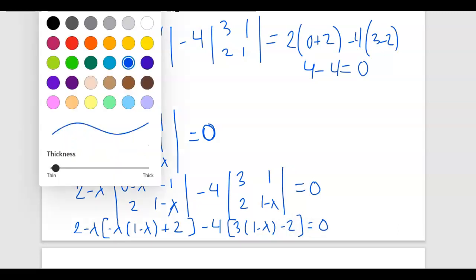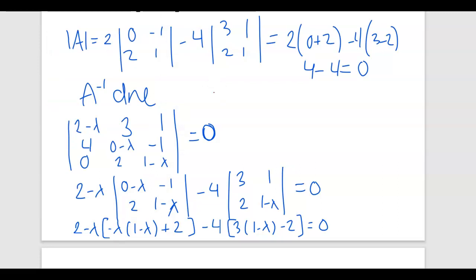And I'm running out of room here, so I'm going to write it up in this part here. So I still have 2 minus lambda. On the inside here, I'm going to have lambda squared minus lambda plus 2 minus 4 times 3 minus 3 lambda minus 2. So I'm going to write this as negative 3 lambda plus 1.